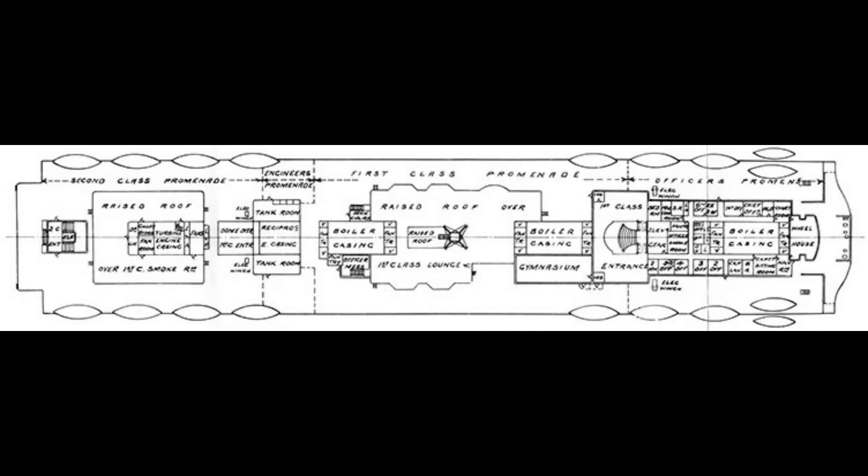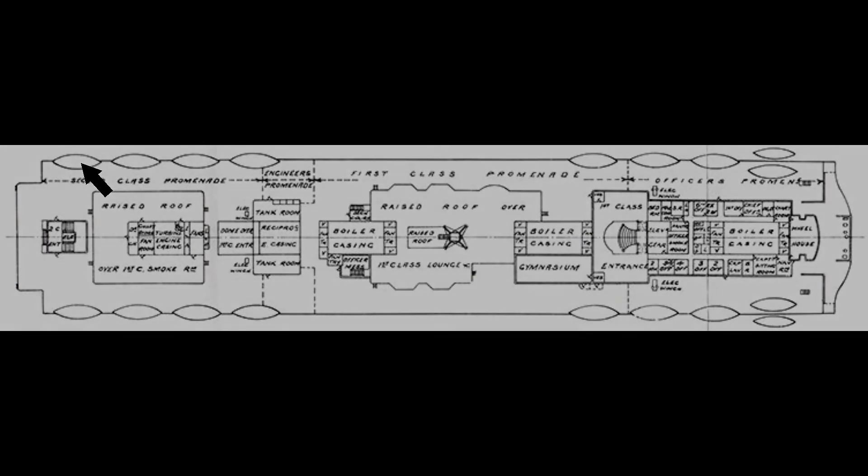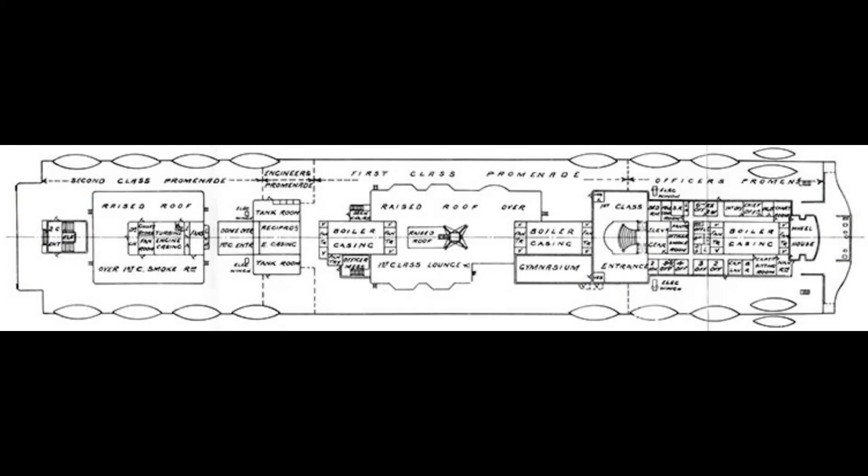At 1:35 AM port, Lifeboat 16 is the thirteenth to be launched with 40 of its 65 seats occupied. At 1:40 AM starboard, Collapsible C is the fourteenth to be launched. On board is White Star Chairman Joseph Bruce Ismay, whose escape caused him to be labeled a coward.